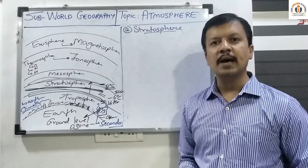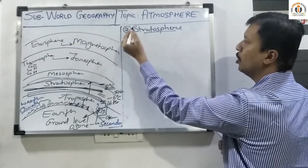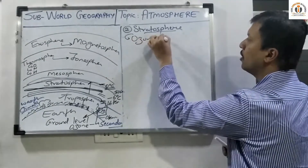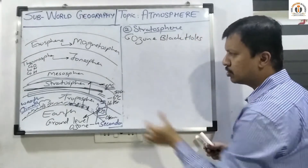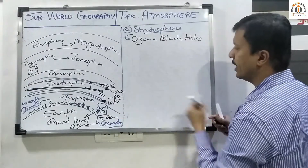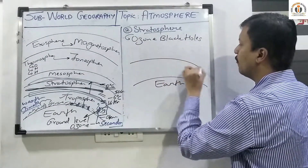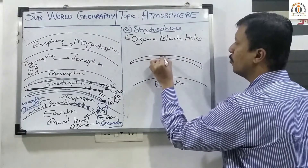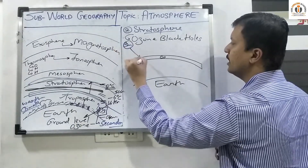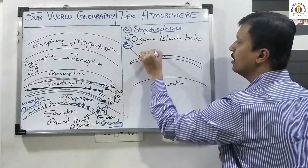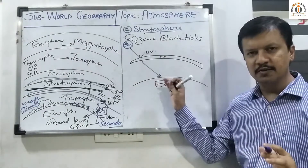Currently, a new concept called ozone black holes is in use. What do we mean by ozone black holes? The band of ozone layer in the stratosphere — O3 — protects us from harmful UV rays of the sun. Under normal conditions, UV rays are absorbed by the ozone so the energy reaching the earth is devoid of UV and not harmful to humans.